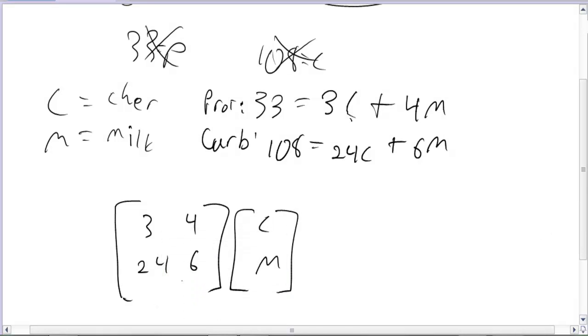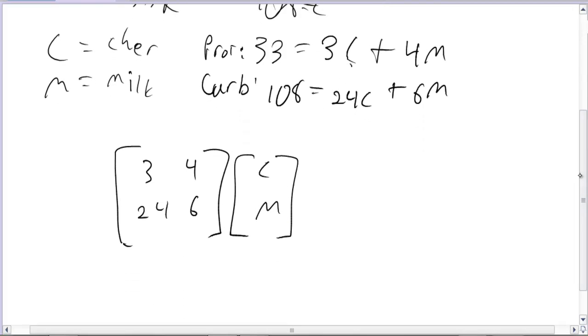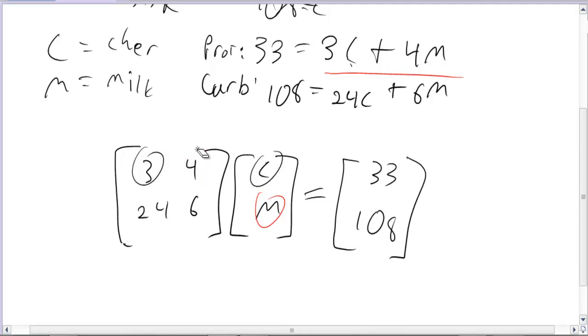So now, when you go back through those - so when I go through this, you can see the matrix multiplication would say 3 times C plus 4 times M, and that gives us back what we originally started with, 3C plus 4M, and that should equal 33. Then same thing down here, so this should equal 108. So that gives me my equations, or sorry, my matrices, so now I'm ready to solve.